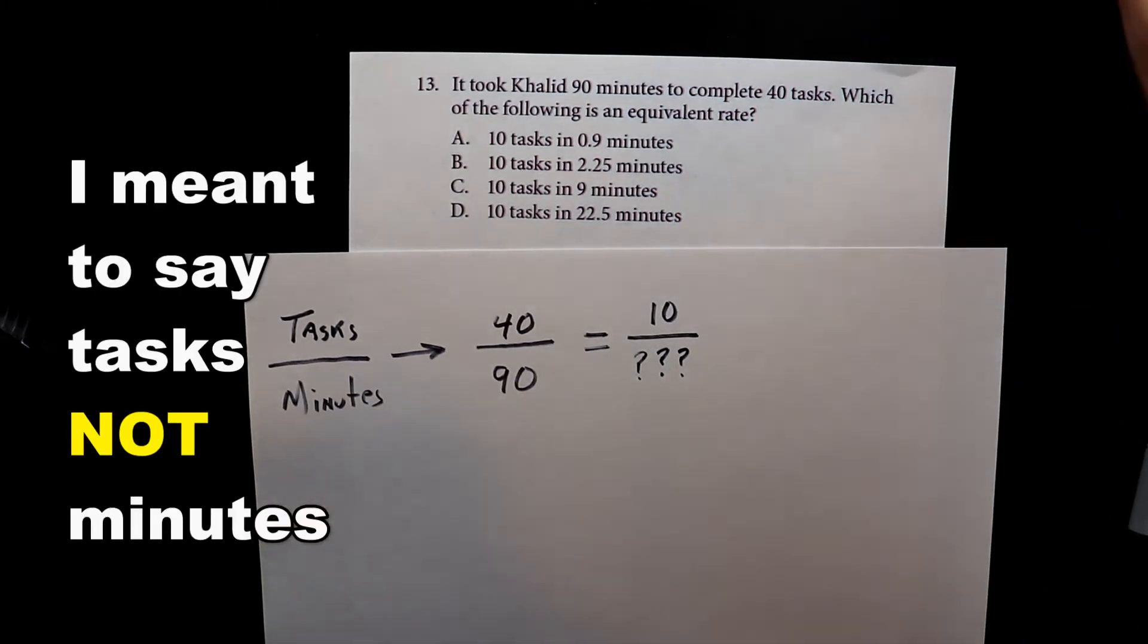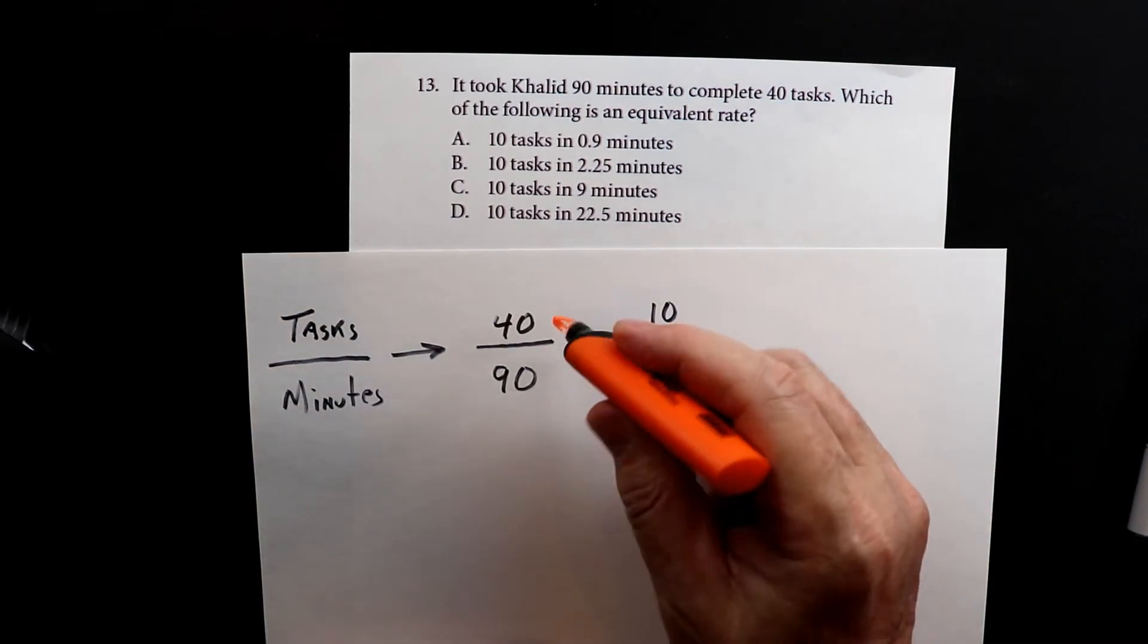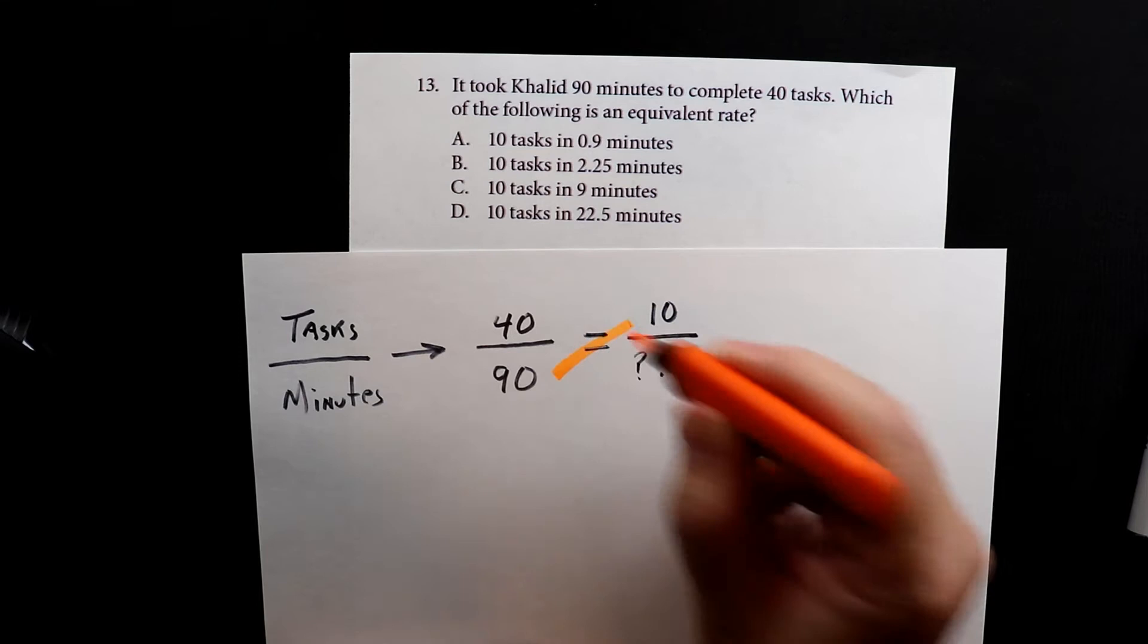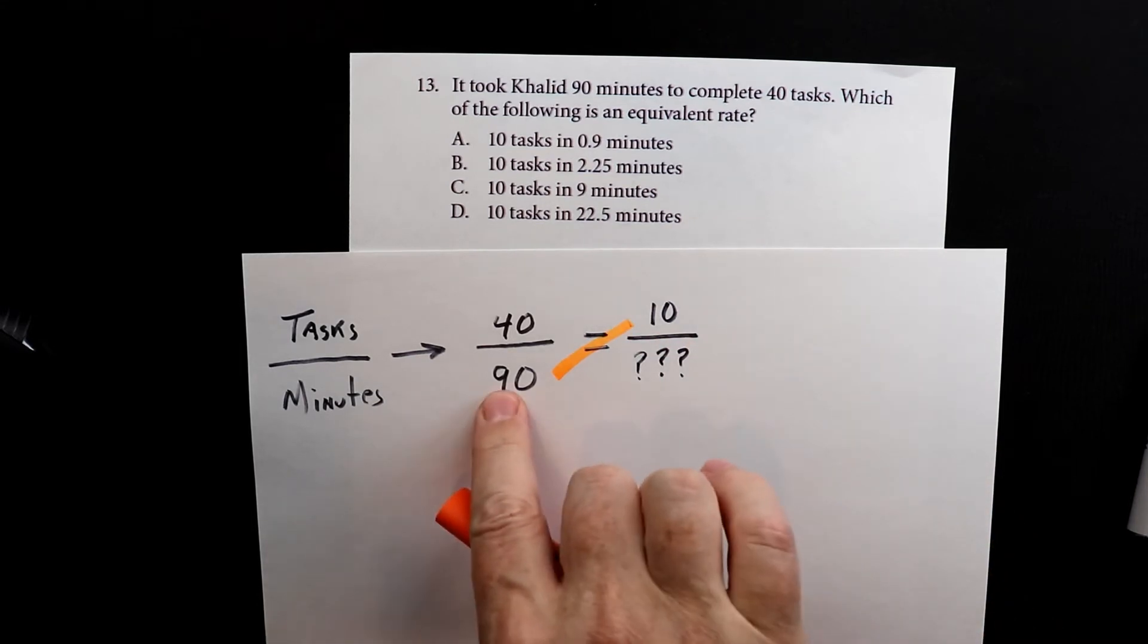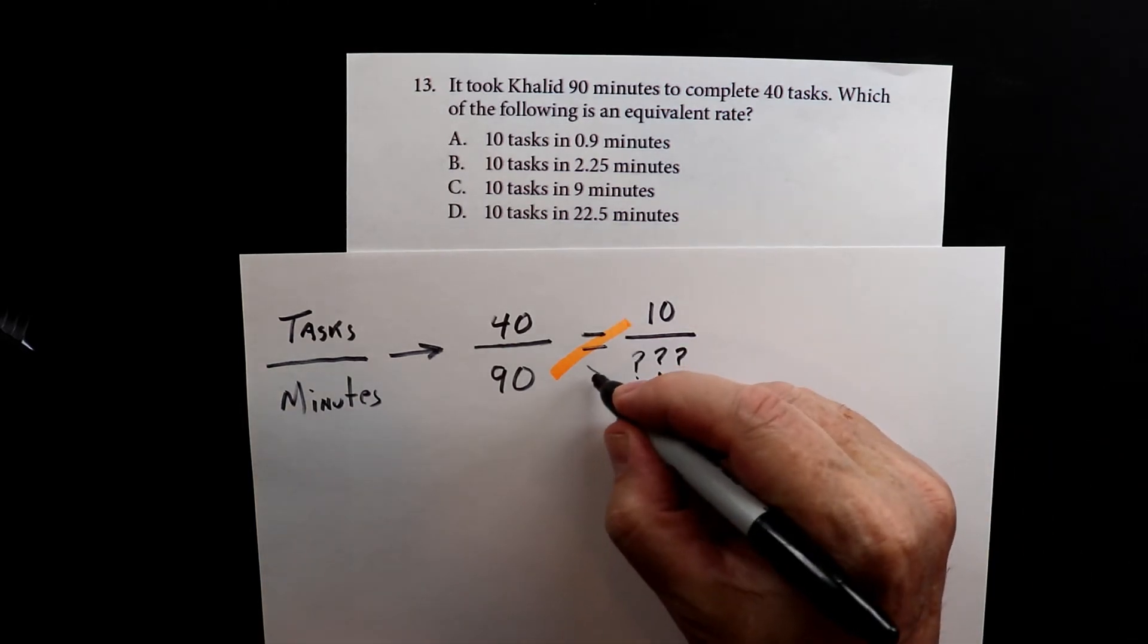So again, we're going to do cross multiplying. When you cross multiply, you multiply the two corners that you know. So we know this corner and this corner.